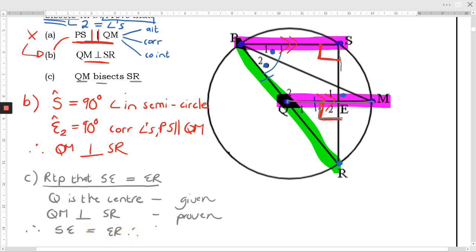Okay therefore SE equals ER. Therefore QM bisects SR. What's my reason? Okay what am I given? I'm given that there's a line from the center and it is perpendicular to the chord. I can't say it bisects the chord because that's the thing I'm trying to prove. So I've got to use other information to get back to the fact that it bisects.